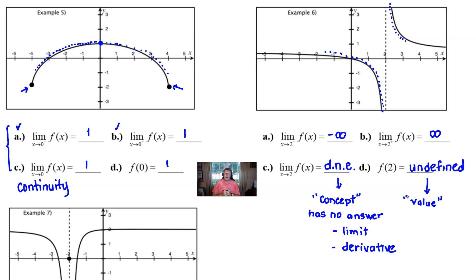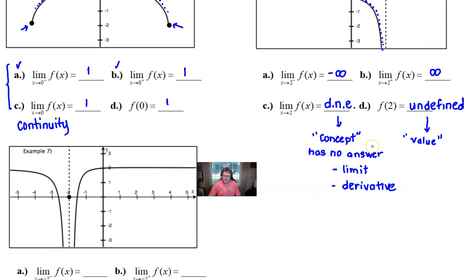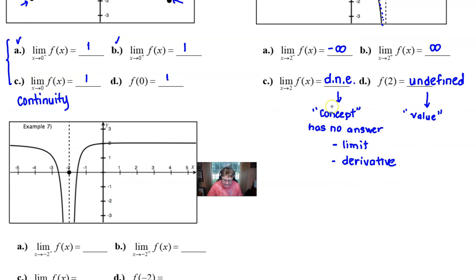And again hopefully that doesn't bother you a whole lot. I'm not going to ever write a problem where does not exist and undefined are both choices in a multiple choice problem because that's way too confusing. All right let's move over to number seven here. We've got a graph that looks a little bit like our number six except we got this little dot right there. What do you guys think about him?